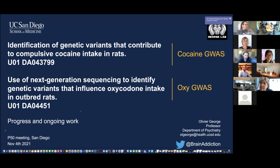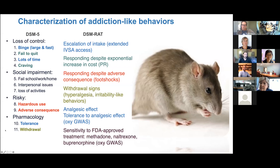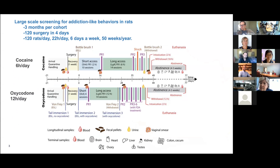I'm going to talk about the cocaine GWAS and the oxycodone GWAS - two studies we have started where we are screening animals for addiction-like behavior: escalation of intake, progressive ratio responding, responding despite adverse consequences, hyperalgesia, and irritability-like behavior. We're also looking at the analgesic effects and tolerance to the analgesic effect of opioids. We test three approved treatments for opioid use disorder in the oxycodone GWAS. The goal is finding genetic variants that predict those behaviors. It's a large-scale behavioral analysis with a complicated protocol, and we've created a biobank with it.